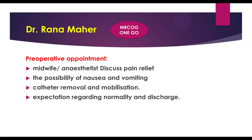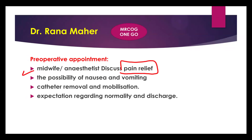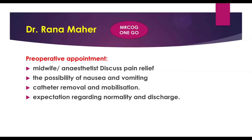At the pre-operative appointment, the midwife and anaesthetist discuss pain relief and anaesthesia options. Offer regional anaesthesia — epidural or spinal — rather than general. Respect patient wishes; it must be a shared decision. Discuss the possibility of nausea and vomiting and the use of anti-emetics before the caesarean section. Discuss catheter removal and early mobilization after delivery. Set expectations regarding discharge: tell the patient she will be admitted and discharged on the same or next day, so the discharge date is known in advance.